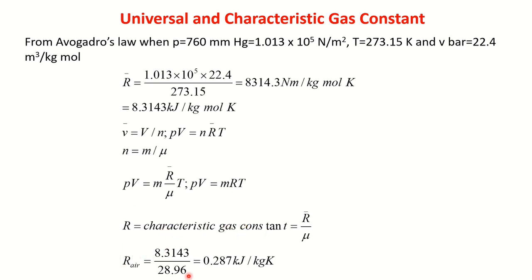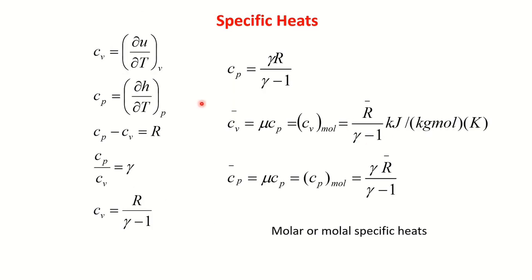For air, the approximate molecular weight is 28.96. Using the universal gas constant, the specific gas constant of air is 0.287 kJ/kg·K. We also define specific heats: Cᵥ is the rate of change of internal energy with respect to temperature at constant volume, and Cₚ is the rate of change of enthalpy with respect to temperature at constant pressure. The relationship is Cₚ − Cᵥ = R.